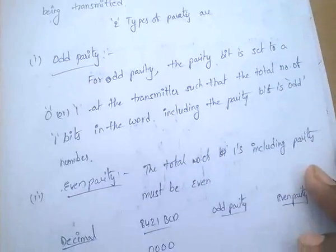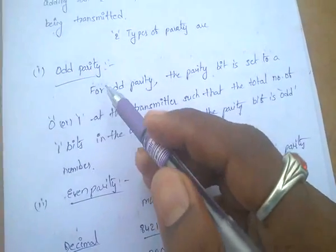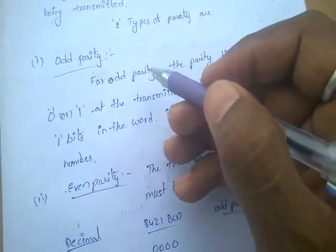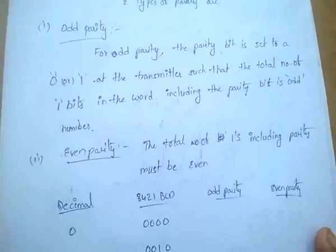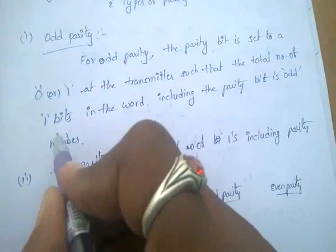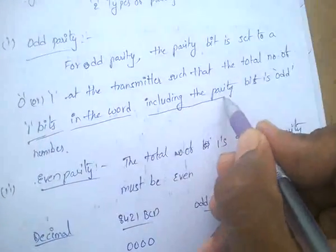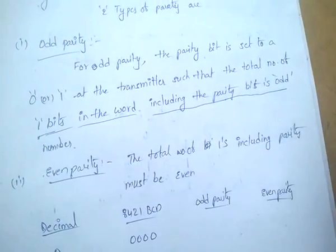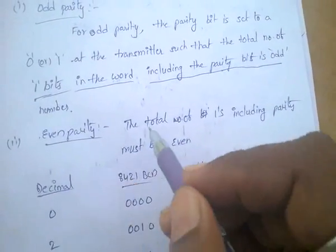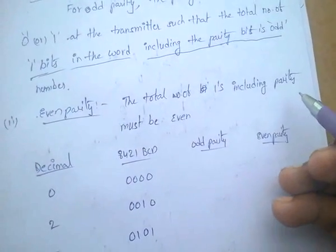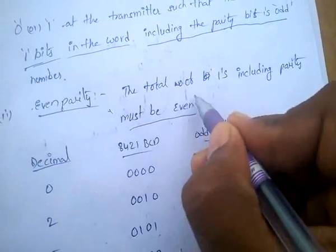There are mainly two types: odd parity and even parity. For odd parity, if any parity bit is added to the digit, the total number of 1 bits in the word including the parity bit must be odd. For even parity, the total number of 1s including the parity bit must be even.